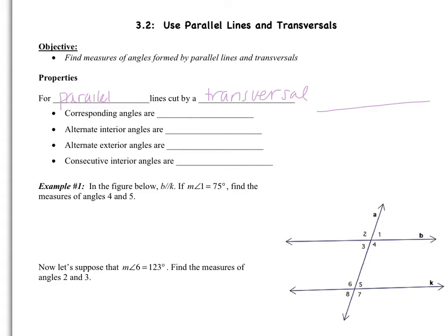Remember, parallel lines are a constant distance apart — they're not going to intersect. Here's the transversal. Corresponding angles are congruent. That's just angles in the same spot. So angles 1 and 2 would be congruent — they're both above the line and to the left of the transversal.